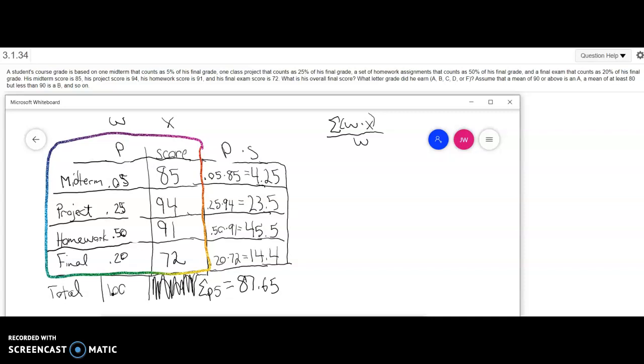But we'll see here the total of your weights when you add up all these numbers is going to be one because I changed it to decimal form. So what you can do is take each of these proportions and multiply them by the score and make another column just as we did in class.